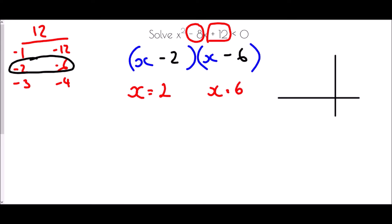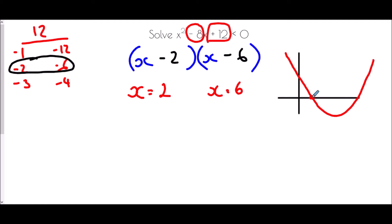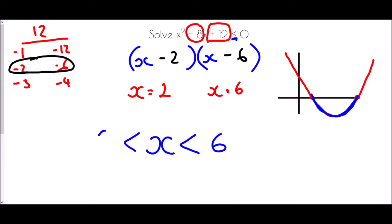In terms of our diagram, a sketch would show the graph crossing at 2 and crossing at 6. We want the values which are less than 0, so those are the points in between. We must be careful of the symbol — it was just a less than in this case, not less than or equal to. So x must be less than 6 and greater than 2.